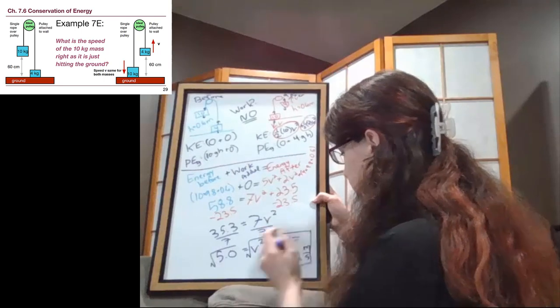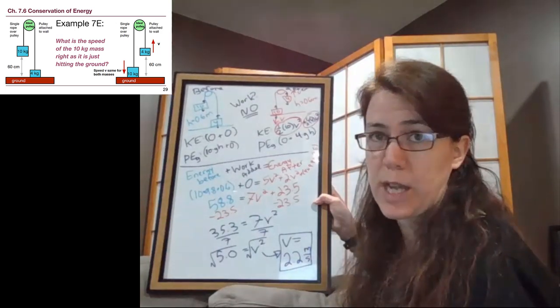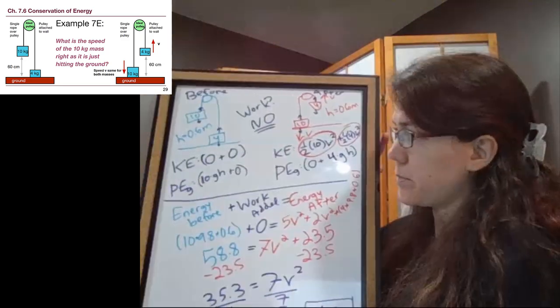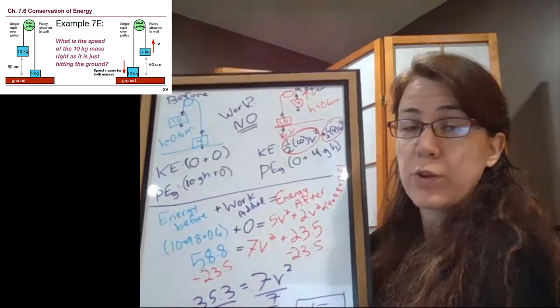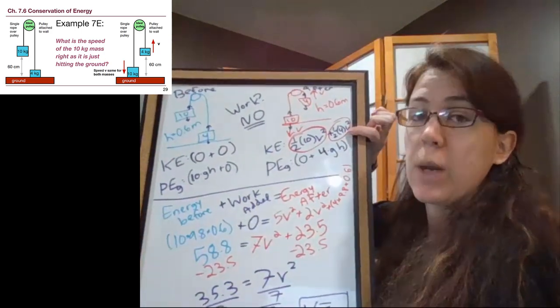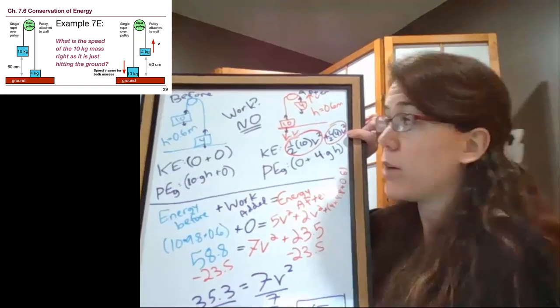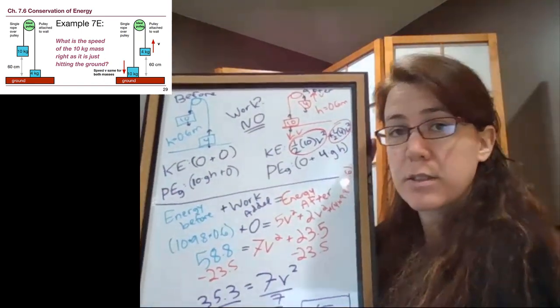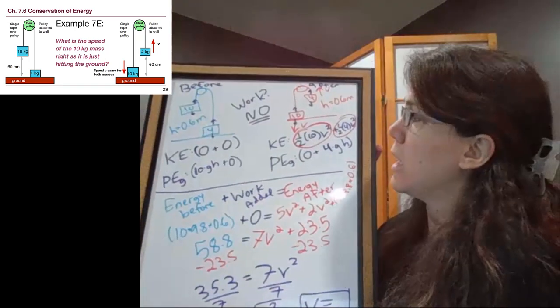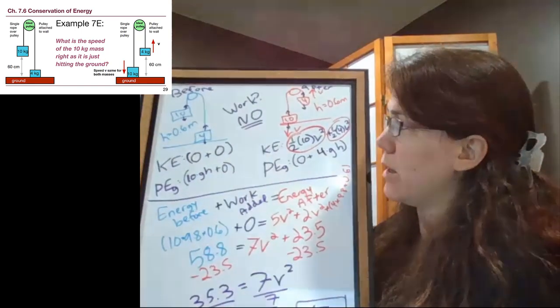That's our final answer here. That speed is how fast the 10 kilogram block is falling when it hits the ground, which is what the question itself is asking. But that is also the same speed as the 4 kilogram block going up in the air. We found a single value for the speed because both of the objects are moving. We have to include both of their terms in the kinetic energy. But the speed is the same for both. Remember, this isn't velocity. We don't care about the fact that one of those arrows points up and one of those arrows points down because energy itself is not a vector. So that 2.2 meters per second is how fast the whole system is rotating around. And so it answers our question for the speed of the 10 kilogram mass as it is hitting the ground. I'll see you in the next one.